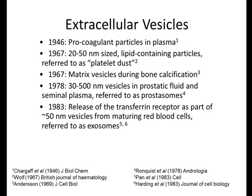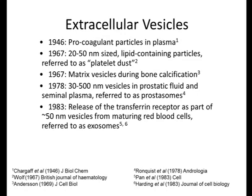Looking historically, extracellular vesicles were described to be present in plasma already in the 1940s as pro-coagulant. In 1967 they were described as platelet dust, but also as matrix vesicles during bone calcification. In the 1970s they were described more in the prostate fluid and are very prominent in prostate secretions and in ejaculates. In 1983 — perhaps the birth date of the modern phase of extracellular vesicle research — two publications showed the release of transferrin receptors as part of the maturation of red blood cells, and these vesicles were referred to as exosomes.